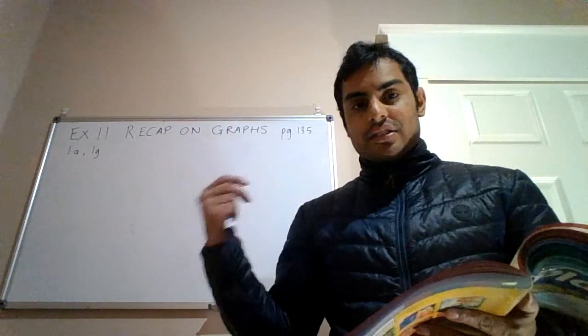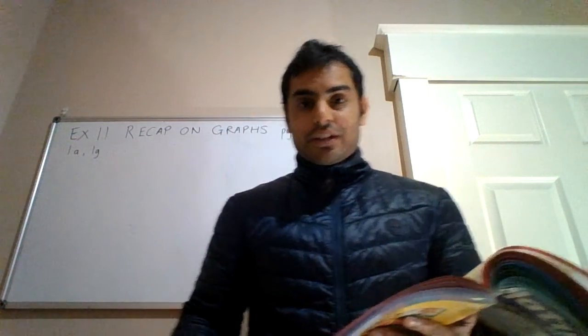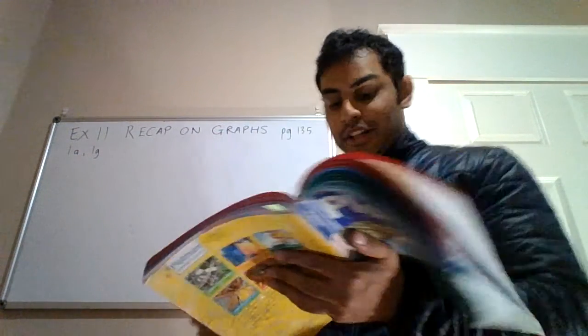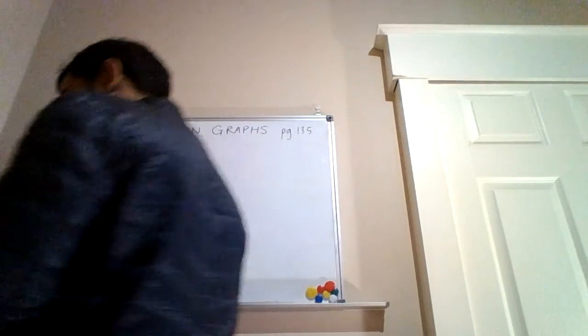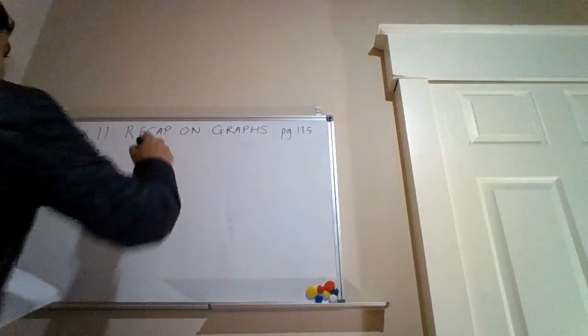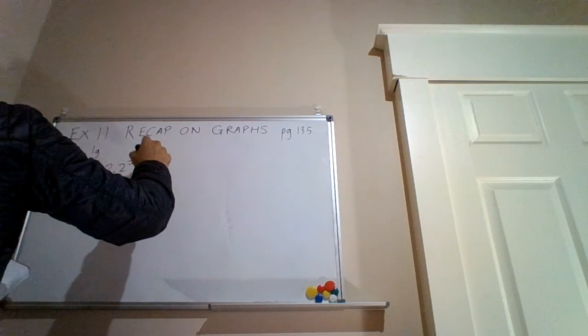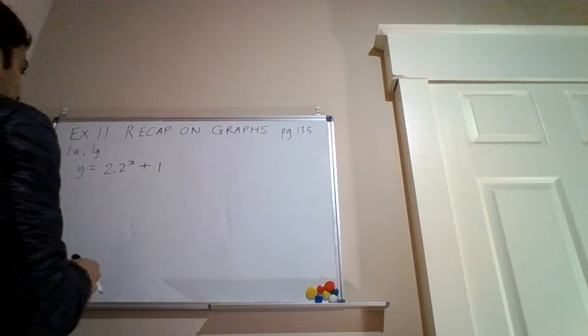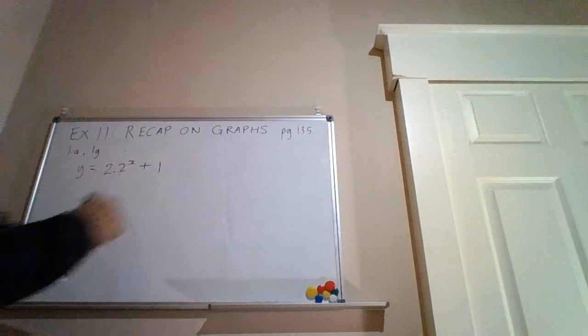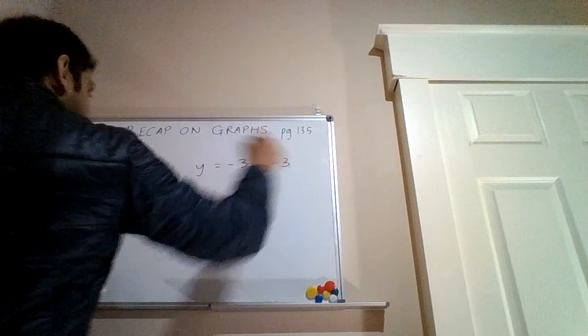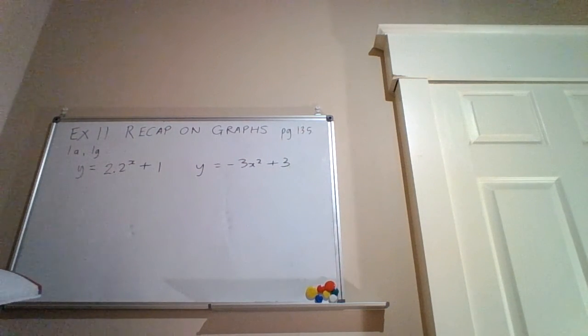I'm going through these things quite slowly, hence this long recap. I'd also like you to continue with the good work and hopefully this can be a strong section for you. So question 1g says: y equals 2 times 2 to the power of x plus 1, and the other graph is y equals minus 3x squared plus 3.